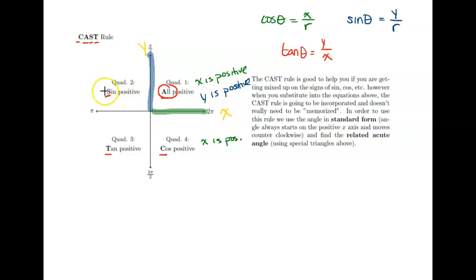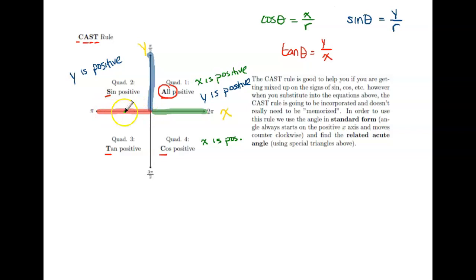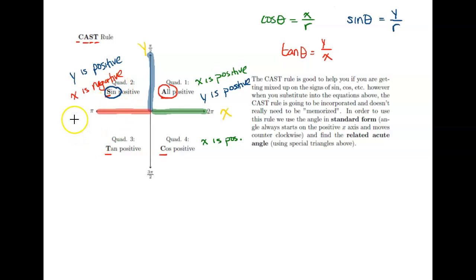In quadrant two, only sine is positive. Sine deals with y, and y is still positive above the x-axis, even in quadrant two. However, on this side of the axis, all x values are negative, so cosine is negative. And since tan is y over x — a positive over a negative — tan is also negative. That's why only sine, the y component, is positive in quadrant two.